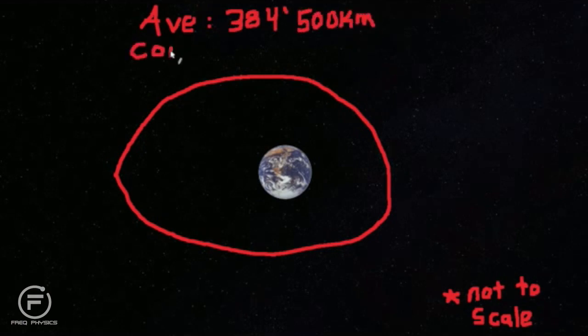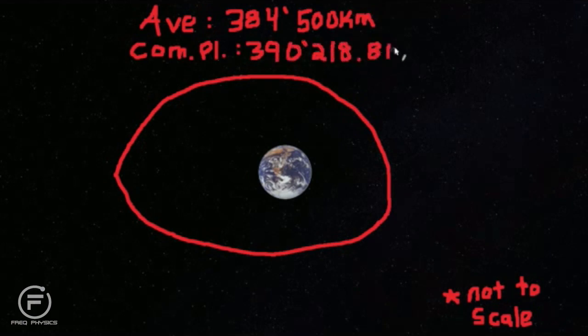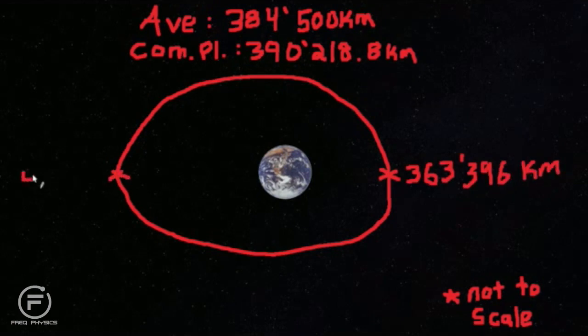But the Moon is on an ellipse, which, at its closest approach, is at 363,396 kilometers away. At its furthest, it is 405,504 kilometers away.